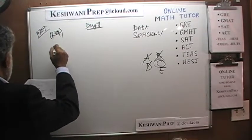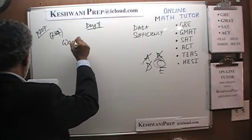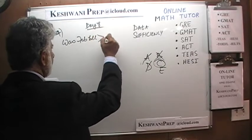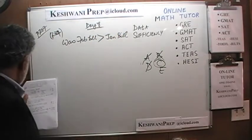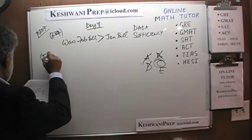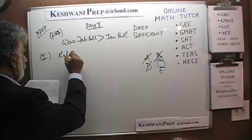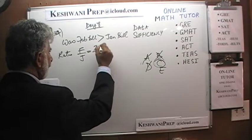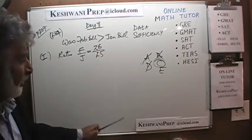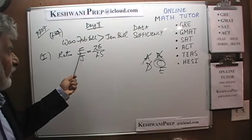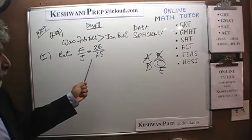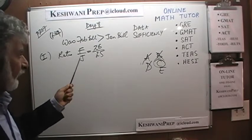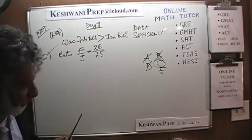Problem 284 asks: was the February bill greater than the January bill? The first statement tells us that the ratio of February to January is 26 to 25. If the ratio was 26 to 25, then clearly the February bill was higher than the January bill — for every $25 paid in January, you paid $26 in February. The first statement by itself is quite sufficient.